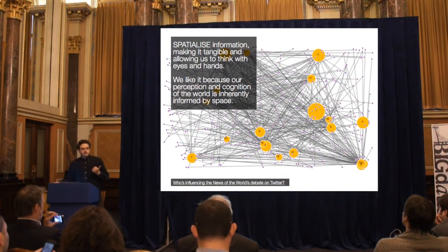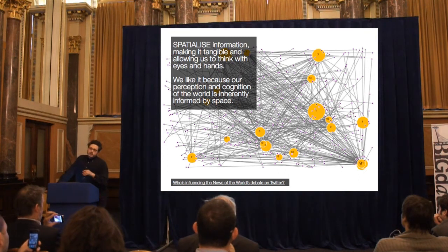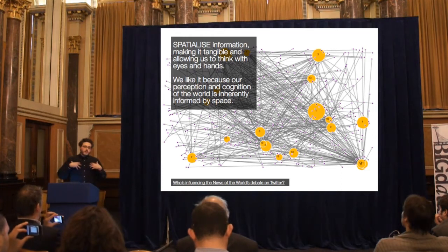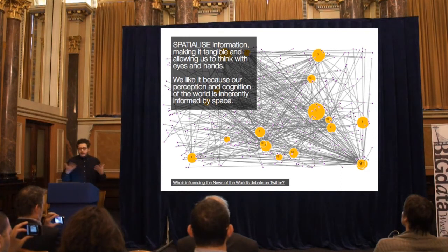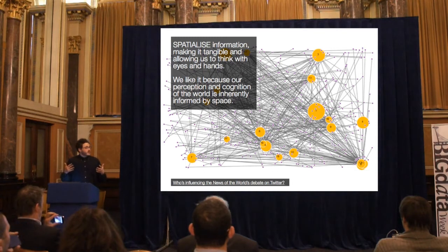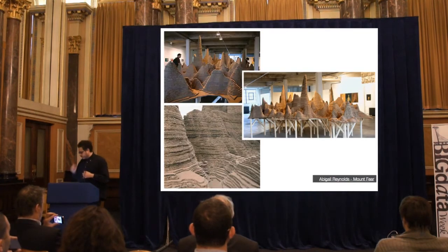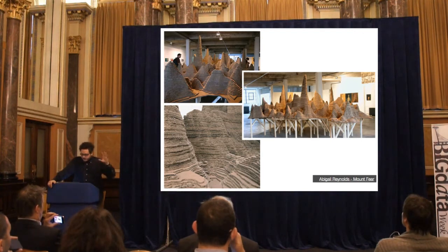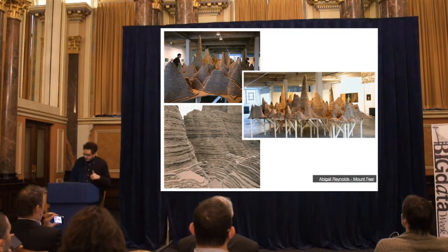The first reason why data visualization helps us is that it allows us to spatialize data — to make it organized in a spatial way. We navigate the world and we navigate knowledge through our experience of the body, and that's why we like data organized spatially, because it allows us to deal with data from a physical point of view. A basic example is a physical chart that visualizes statistics of deaths in Hackney, which you can actually chart and navigate through.